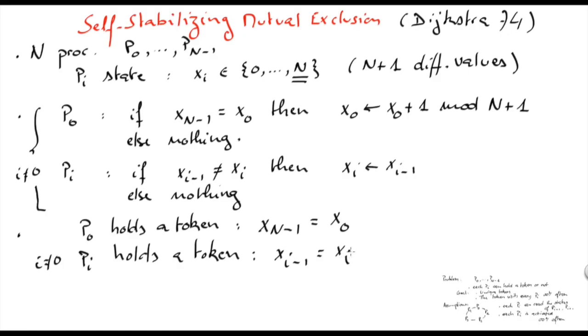This is the mutual exclusion algorithm of Dijkstra, and we can prove that it is self-stabilizing. This means that starting from an arbitrary configuration, we will eventually reach a configuration with a unique token, and this token will visit every node in the system infinitely often. You can refer to another lesson for the actual proof of this claim.